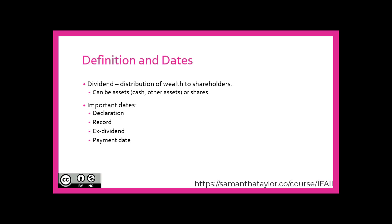Think about how the declaration date ties into your definition of a liability with past, present, and future. The record date is the date identifying all shareholders — otherwise known as shareholders of record — and these are the people that will receive the dividend declared on the declaration date. There is no journal entry relevant to the date of shareholders of record. The ex-dividend date: anyone who acquires shares on or after this date will not receive the dividend.